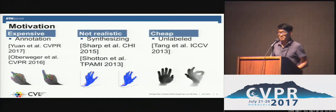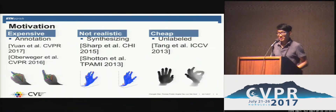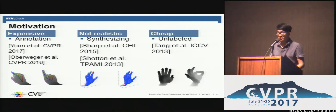Getting the unlabeled depth map of hand is easy, which motivates semi-supervised methods. Prior work approached this from a discriminative perspective by using transductive random forests for semi-supervised learning.